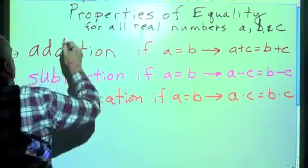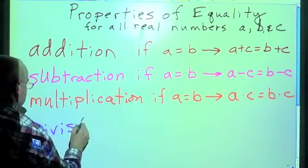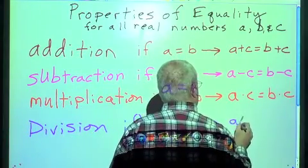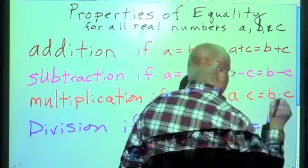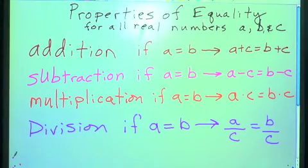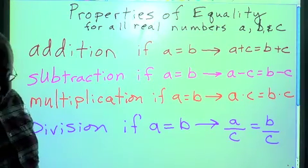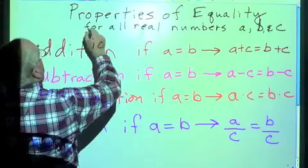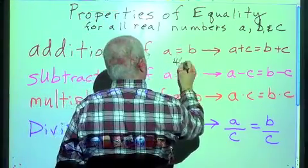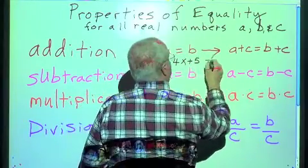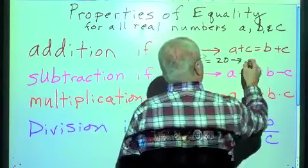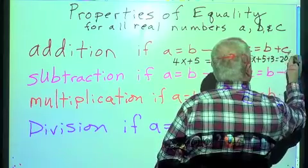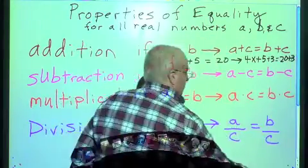Let's look at division. If A equals B, then A divided by C equals B divided by C. Now let's put in some examples that tell us exactly and show us how this works in an equation.